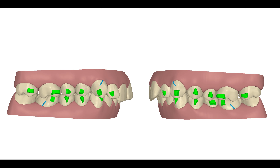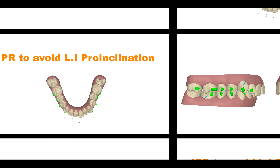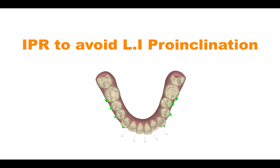Also, on the tooth where I put a cut, I put an attachment to have good retention. Remember, when you put an elastic, you have to put a cut with an attachment just to prevent the disinsertion of the aligner.